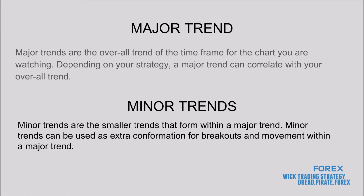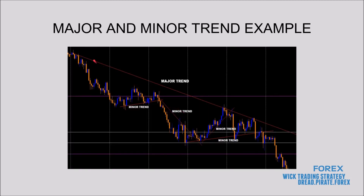Minor trends are the smaller trends that form within a major trend. Minor trends can be used as extra confirmation for breakouts and movement within major trends. Here you can see the major trend is overall bearish, but within that you get some range trends and minor trends up here and there within the overall bearish trend. As a scalper, I pay close attention to minor trends because I'm looking for breakouts, tests, and retests of different trend lines and zones to enter scalp trades.